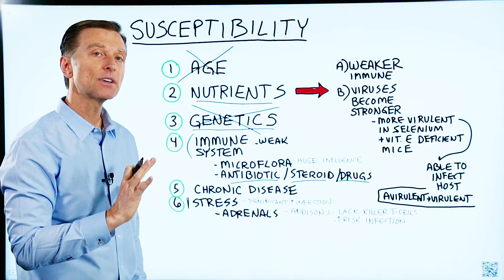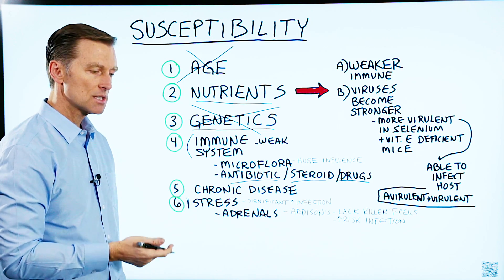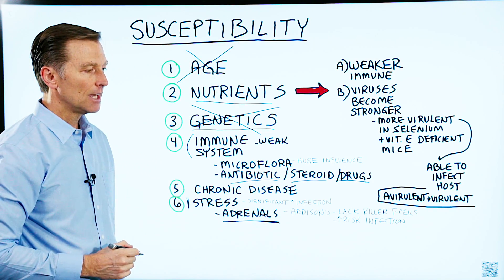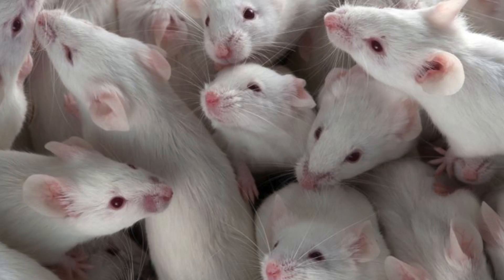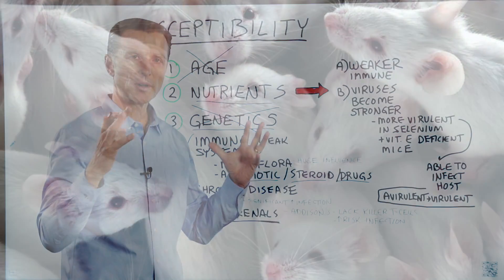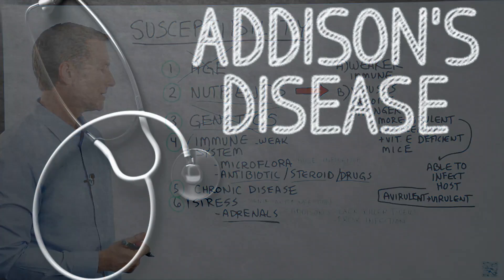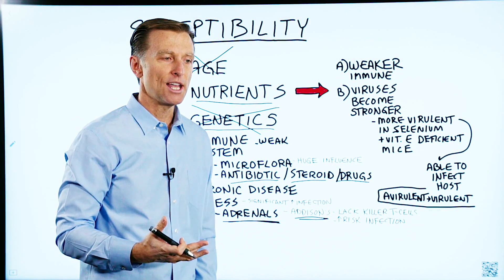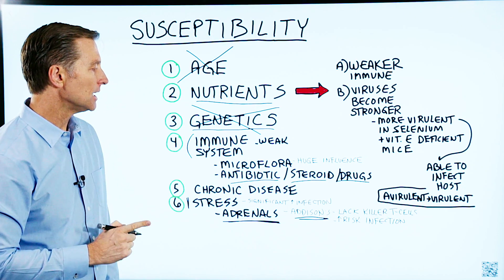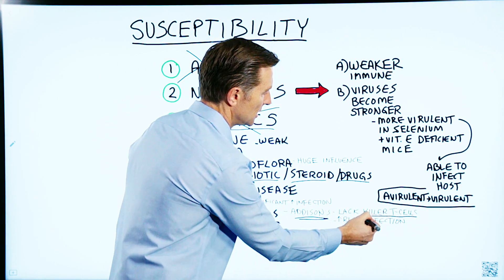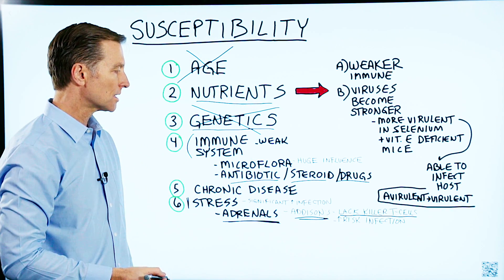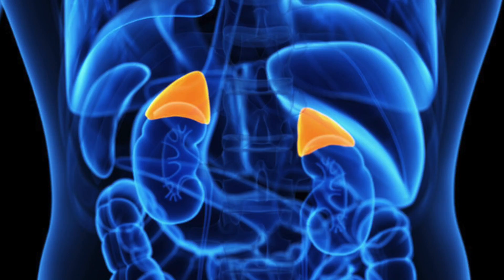Number six: stress. Stress significantly increases risk of infections and viruses. Your adrenal glands regulate your stress. In mice that had their adrenals extracted, there were all sorts of immune system problems and increased risk of infections and viruses. In Addison's disease — where your adrenals are basically shut down and you need to take adrenal hormones — you'll see a lack of killer T cells. You need killer T cells to defend against viruses, and your risk of infections goes way up. So the adrenals are definitely involved.